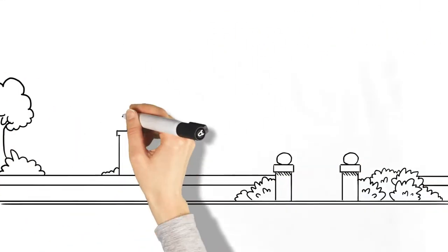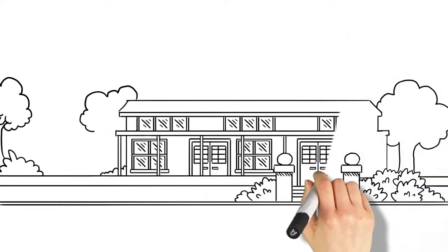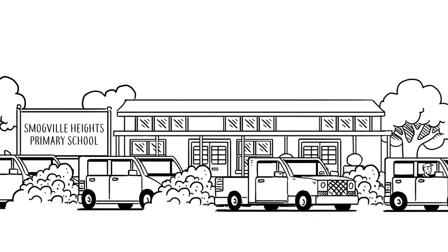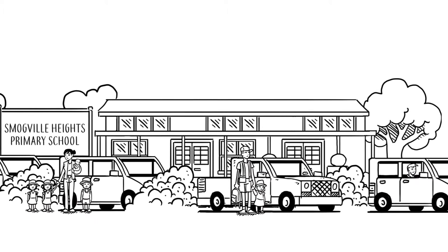As well as the human tragedy and economic loss, road trauma also makes people feel unsafe. This feeling can cause people to stop doing normal things like letting their kids walk or cycle to school.